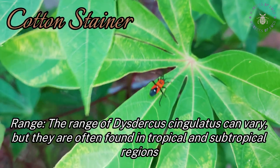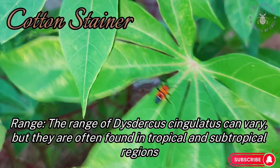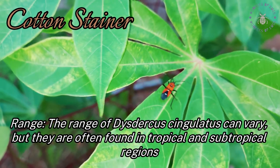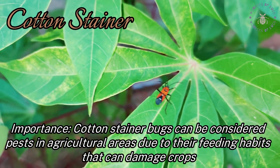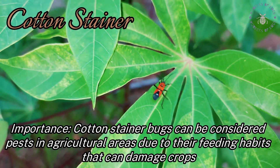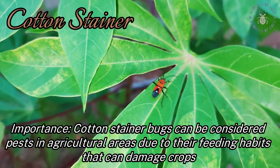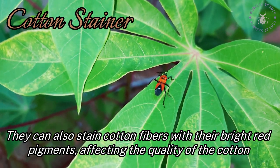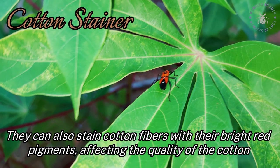The range of Dysdercus cingulatus can vary, but they are often found in tropical and subtropical regions. Cotton stainer bugs can be considered pests in agricultural areas due to their feeding habits that can damage crops. They can also stain cotton fibers with their bright red pigments, affecting the quality of the cotton.